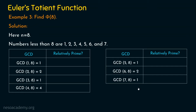Wherever the GCD is 1, those numbers are relatively prime to 8. So: 1 is relatively prime to 8, 2 is not, 3 is relatively prime, 4 is not, 5 is relatively prime, 6 is not, and 7 is relatively prime. That gives us 4 numbers — 1, 3, 5, and 7 — that are relatively prime to 8. Therefore, phi of 8 is equal to 4.